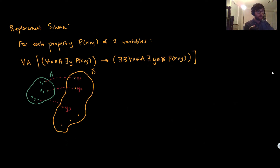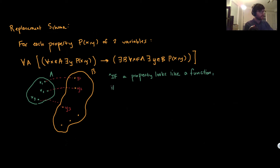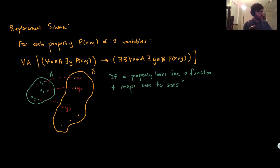Intuitively, one way of writing this is: if a property looks like a function that maps sets to sets, then the pointwise image of that function — when the domain is a set — is also going to be a set as well.